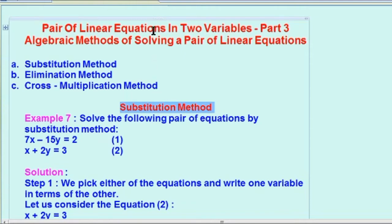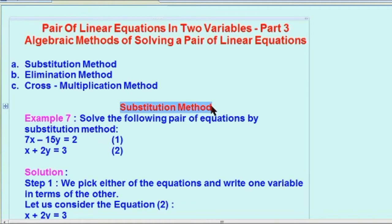Pair of linear equations के algebraic methods solving के लिए वो तीन होते हैं. एक होता है substitution method, दूसरा होता है elimination method और थर्ड है cross multiplication method. आज के इस part three में हम substitution method से किस तरह से pair of linear equations in two variables को solve कर सकते हैं, वो discuss करेंगे.